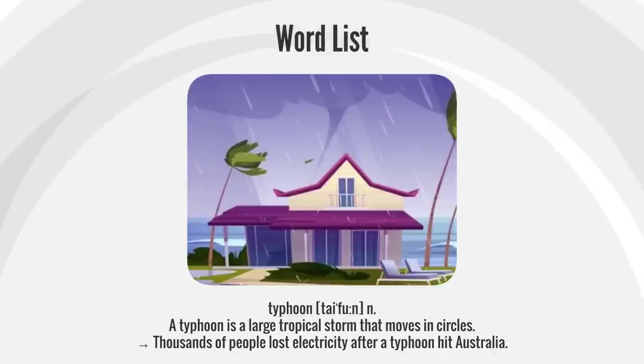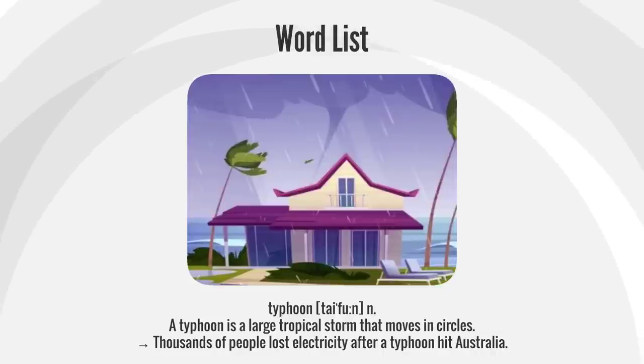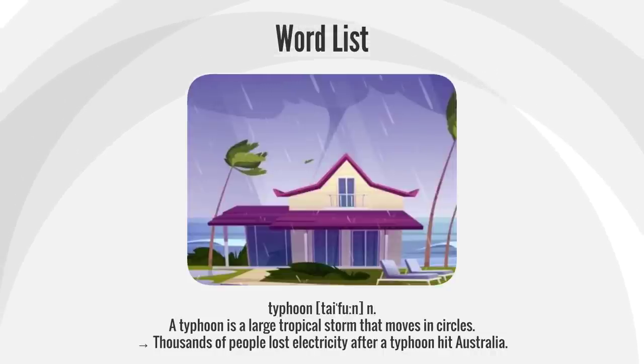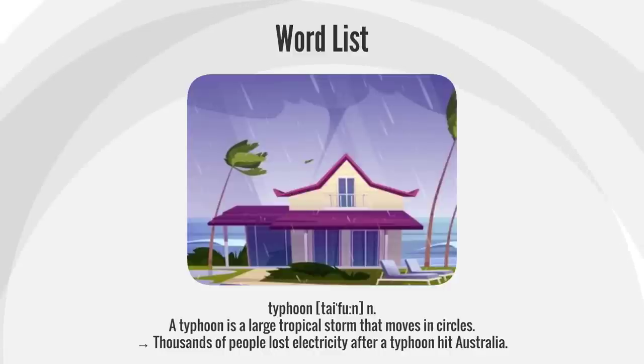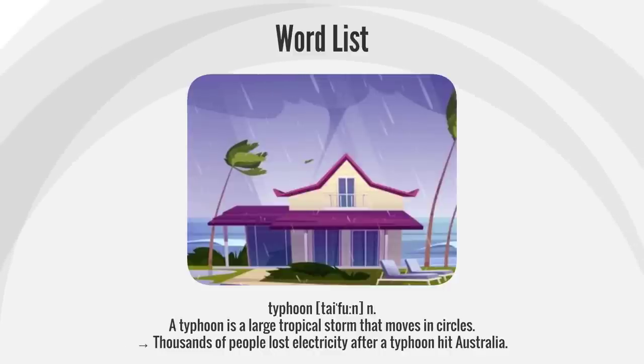Typhoon. A typhoon is a large tropical storm that moves in circles. Thousands of people lost electricity after a typhoon hit Australia.